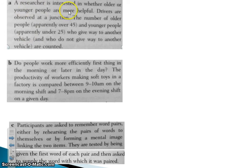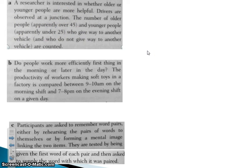Here's an example. A researcher is interested in whether older or younger people are more helpful. Drivers are observed at a junction; the number of older people, apparently over 45, and younger people, apparently under 25, who give way to another vehicle are counted. The IV would be the age of the participants — whether they were over 45 or under 25 — as this is what is changing between the two conditions. The DV would be how many of them stopped.